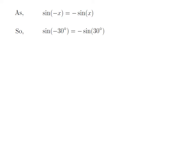Let us apply the above identity for sine of minus 30 degrees. Here, x is 30 degrees. So, sine of minus 30 degrees is equal to minus sine of 30 degrees.